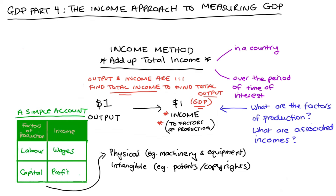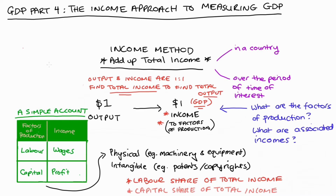So adding up our total income and finding GDP — if we modeled our economy like this — would amount to adding up wages and profits. I'll mention briefly that this way of looking at how we divide up our total income leads us to some important measures: we call them the labor share of total income and the capital share of total income. The labor share of total income is measured as total wages, salaries, benefits — all of the money income that goes to our workers — as a proportion of our total income or of GDP.